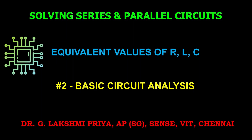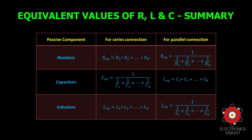This video is about solving series and parallel circuits to estimate the equivalent values of resistance, inductance, and capacitance. To solve any series or parallel circuit, it is essential to estimate the equivalent values of R, L, and C components, which all come under the passive component category. This tabulation gives the equivalent resistance, capacitance, and inductance for series and parallel connections separately, applicable to any number of resistors, capacitors, or inductors connected.